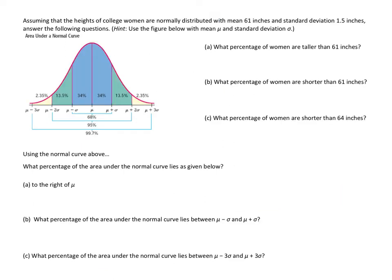Assuming that the heights of college women are normally distributed with a mean of 61 inches and a standard deviation of 1.5 inches, we'll answer the following questions using this bell curve where the deviations are labeled and the percentages of the population are shown. What percentage of women are taller than 61 inches? Since that's the mean, 61 is at the peak. Your average separates the top and bottom 50 percent, so the answer is 50 percent.